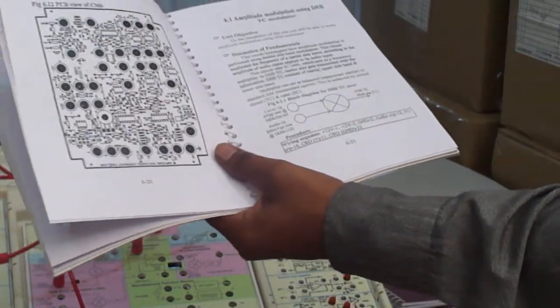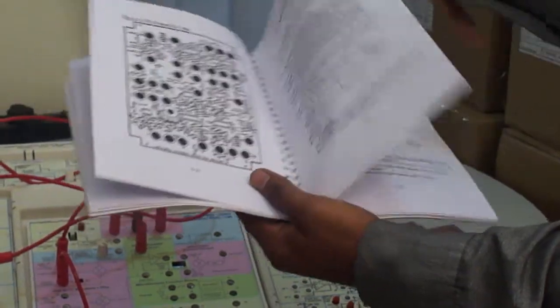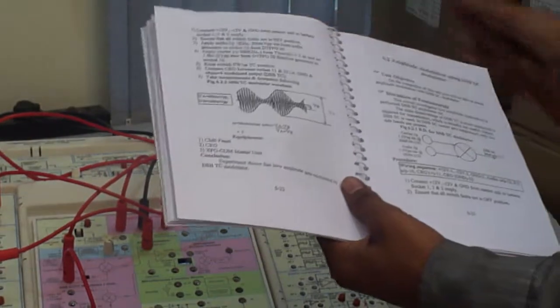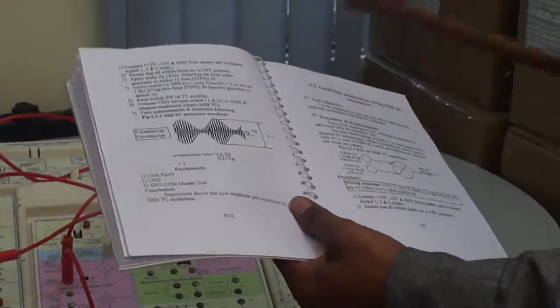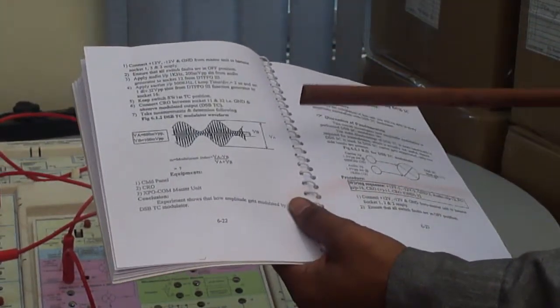Procedure wiring sequence is given, and the calculation part for modulation index. We have to calculate it here.